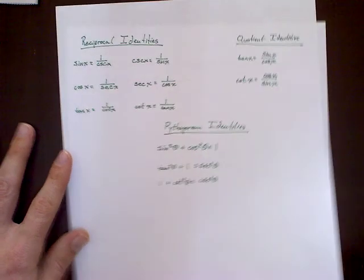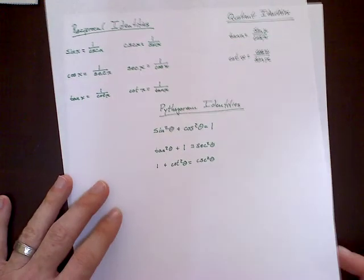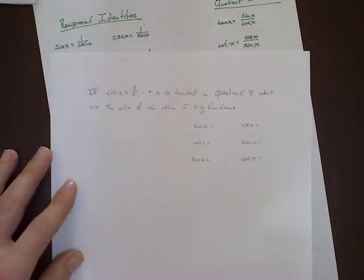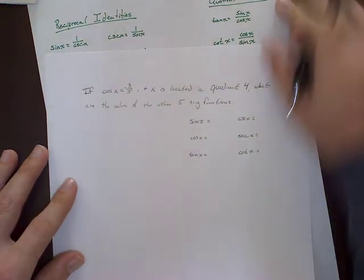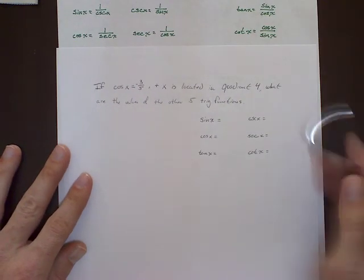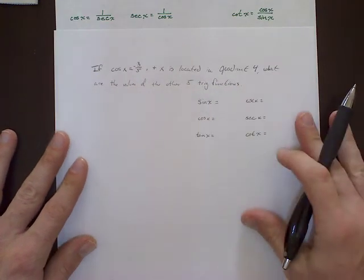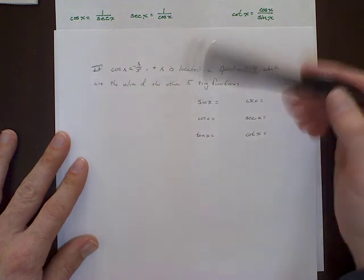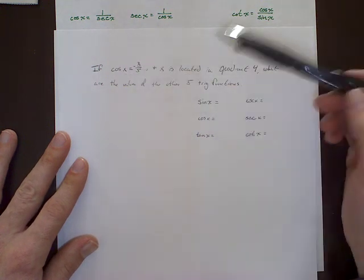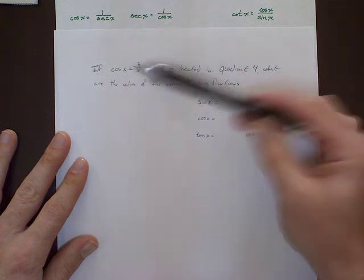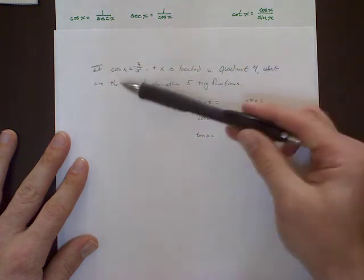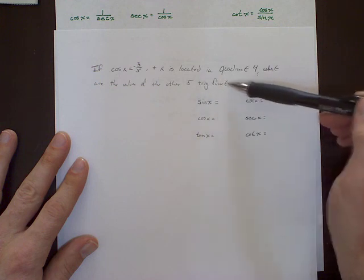So what we're going to do here is we're going to take a look at an example of a problem that actually requires these trig identities to solve. So let's take a look here. It says, if the cosine of x equals negative 3 over 5, and x, and remember x represents some angle, is located in quadrant 4,